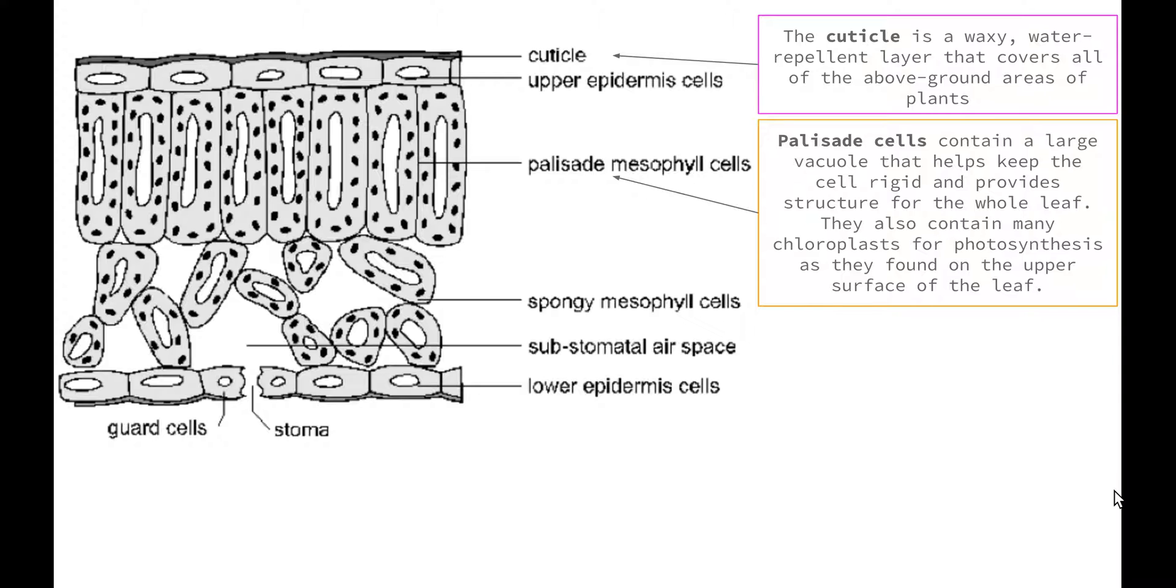Next we have palisade cells. These contain a large vacuole, as we can see that large white space in the middle here, which helps to keep the leaf rigid and provides structure for the whole leaf. The vacuole contains mostly air, also does contain water, but when the leaves have enough water these vacuoles push out against the sides of the cell and provide it with that rigid structure.